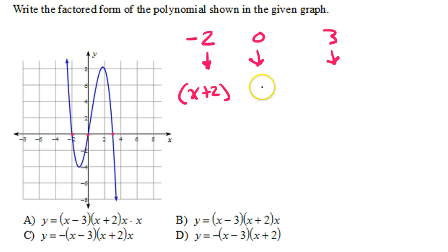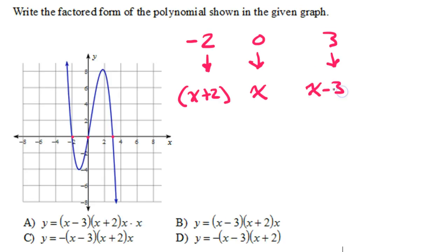This 0 would come from a factor of simply x. If I set x equal to 0 and solved, I would just get x equals 0. And 3 would come from a factor of x minus 3. If I set this equal to 0, it would give me 3. So these are the factors.